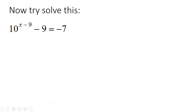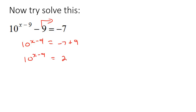But what if you have a situation where you can't make the bases the same? For example, if you took the 9 over, you'd have 10 to the power of x, take away 9, equals negative 7, add 9. You end up with that. Now, it is impossible to turn these two numbers into the same base. So what are we going to do? When you cannot make these numbers the same, we need to use logs.